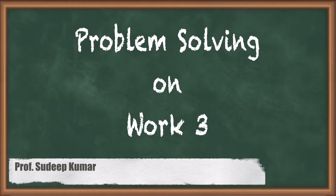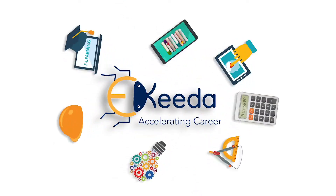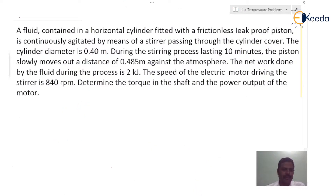In this problem, a fluid is contained in a horizontal cylinder fitted with a frictionless leakproof piston, and is continuously agitated by means of a stirrer passing through the cylinder cover. The cylinder diameter is 0.4 meters. During the stirring process lasting 10 minutes, the piston slowly moves out a distance of 0.485 meters against the atmosphere. The net work done by the fluid during the process is 2 kilojoules. The speed of the electric motor driving the stirrer is 840 rpm. Determine the torque in the shaft and the power output of the motor.